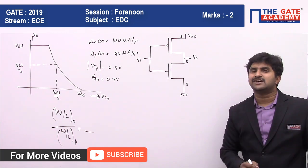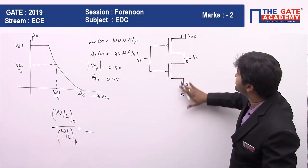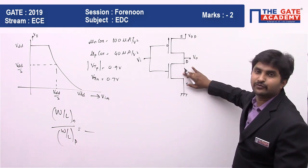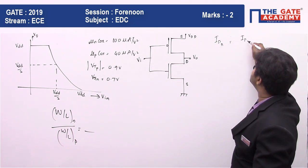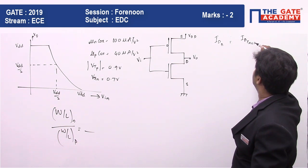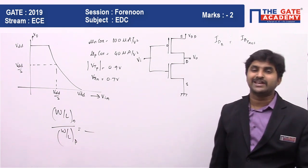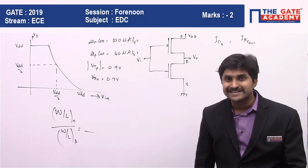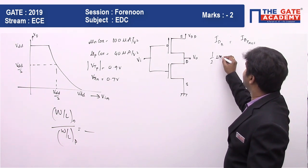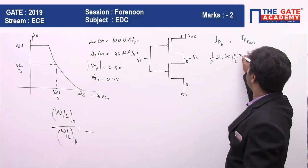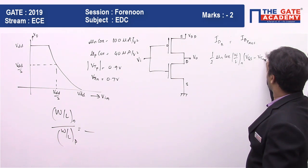Both transistors are going to operate in the saturation region. In saturation, the current is the same — the current flowing in PMOS equals the current flowing in NMOS. So ID(NMOS) = ID(PMOS). The drain current is given by: ID = (1/2) · μN·Cox · (W/L)N · (VGS − VT)².